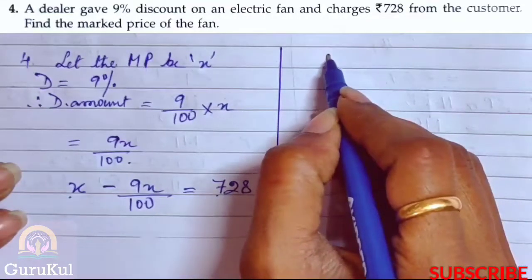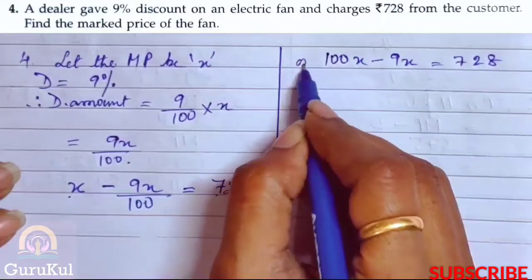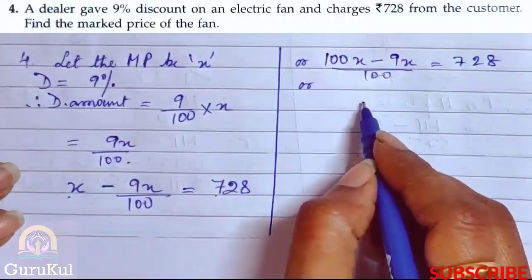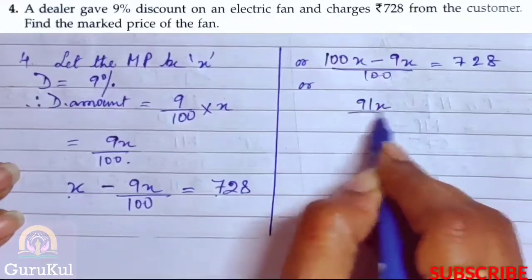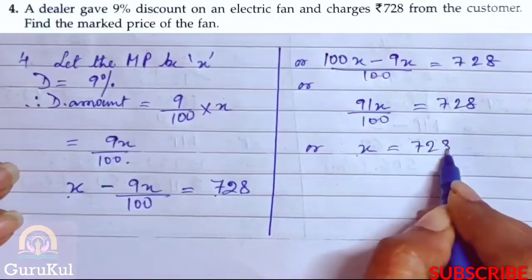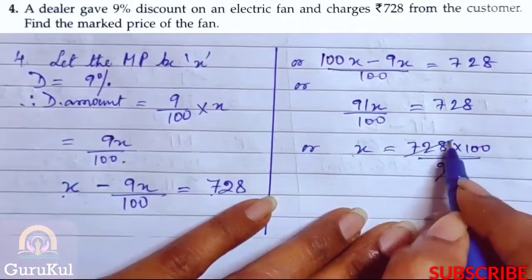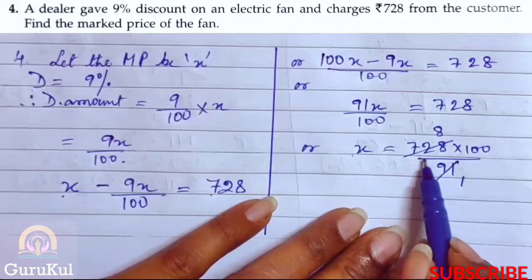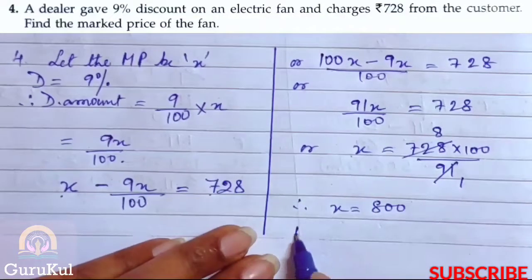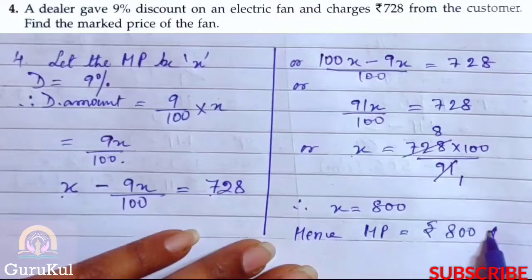Now we are going to solve this given equation. So this becomes 100X minus 9X equals 728 times 100. Or 91X by 100 equals 728. So X equals 728 into 100 by 91. Therefore X equals 800. Hence marked price is equal to Rs.800. And this is the answer.